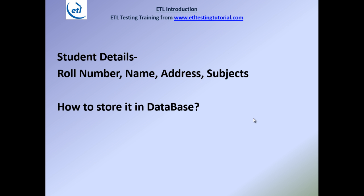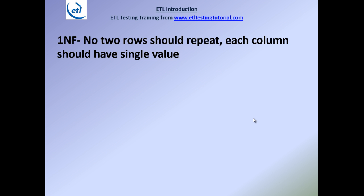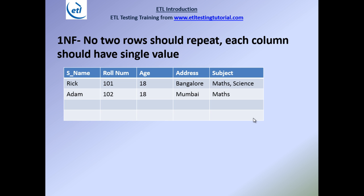Let's understand normal forms one by one. All rules must be followed for your data to be normalized and organized properly. The first normal form says: no two rows should repeat, and each column should have a single value. That means the complete row should not be duplicated — you should not have two identical rows.